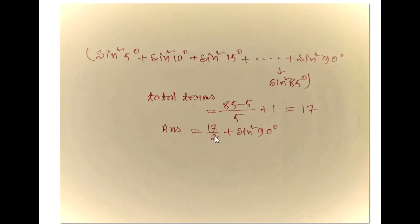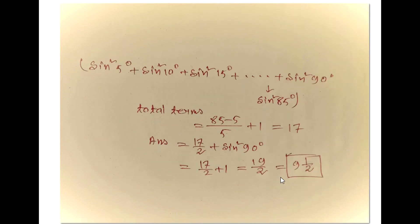So our answer will be 17 divided by 2, plus sin square 90 degree — that term which is excluded from this bracket. So our answer will be 17 over 2 plus 1, equals 19 over 2, which is 9 and a half.